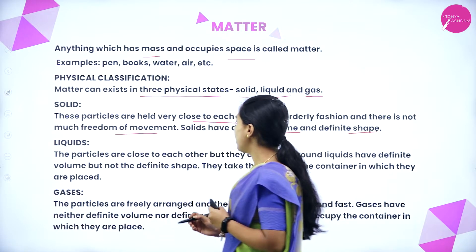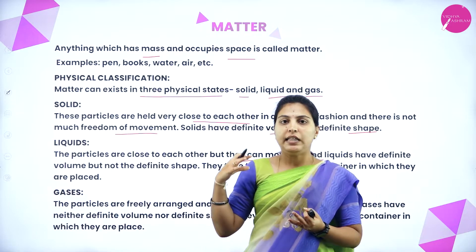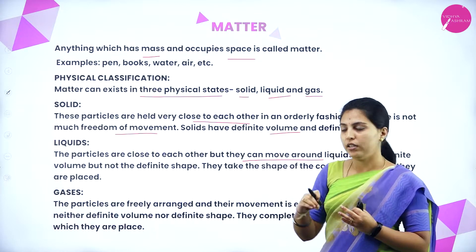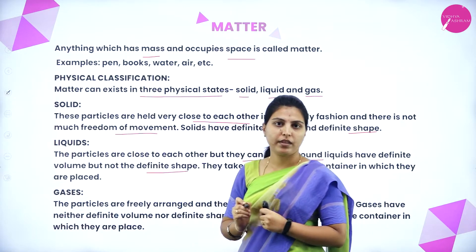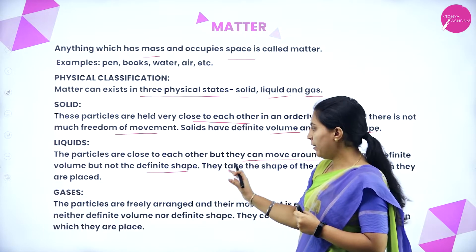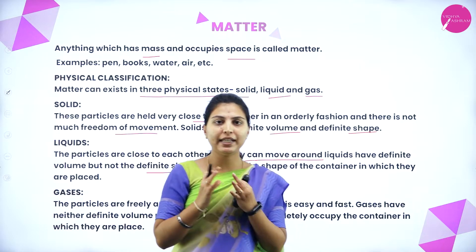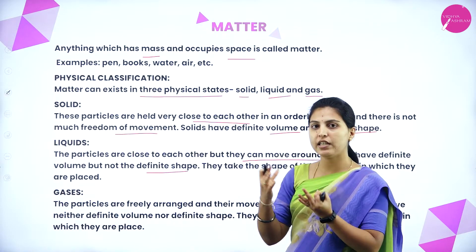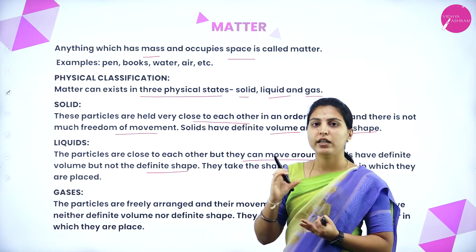In liquids, the particles are close to each other but they can move around. The molecules are close together but there is some space and they can move easily in between. Liquids have definite volume but not a definite shape — they take the shape of the container in which they are placed. The volume can be measured, but the shape depends on the container.